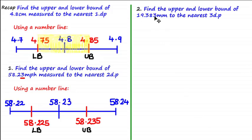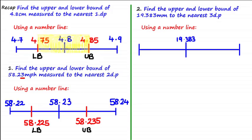Next question: find the upper and lower bound of 19.383 millimeters to the nearest three decimal places. Using the number line, we place the rounded value 19.383 in the middle. We then find the next number up and down using the fact that the value has been rounded to the nearest three decimal places, so we find the value at the third decimal place.